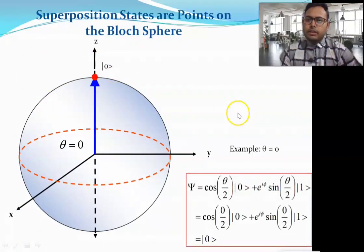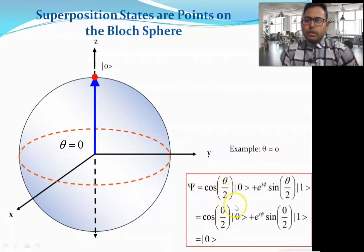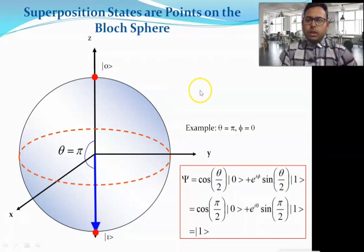As an example, if θ = 0, we rotate state |0⟩ from the z-axis by 0 degrees and get state |0⟩. Substituting θ = 0 into the equation confirms this. If we put θ = π and φ = 0, substituting into the equation gives |ψ⟩ = |1⟩.